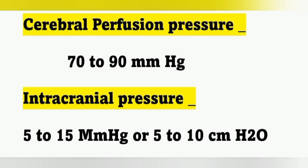The next important point: normal cerebral perfusion pressure is 70 to 90 mm Hg. Normal intracranial pressure is 5 to 15 mm Hg or 5 to 10 centimeters of water.